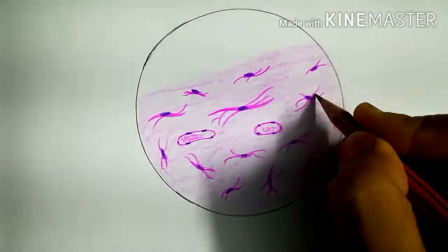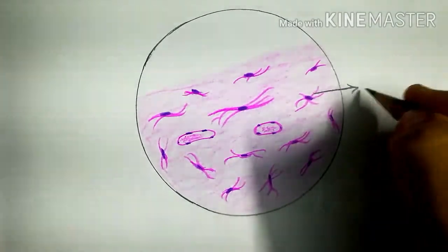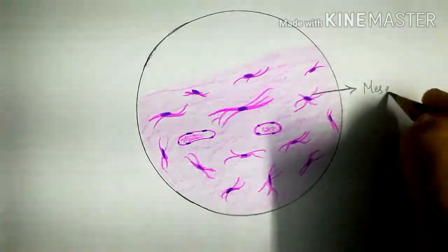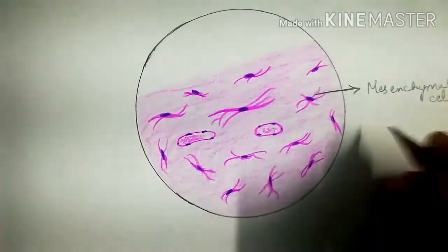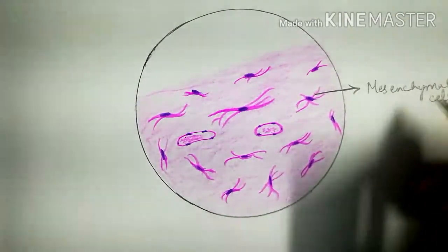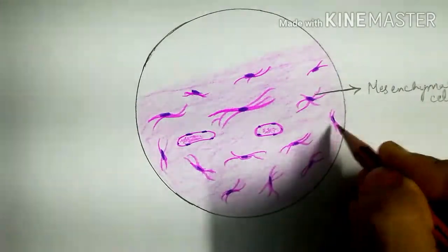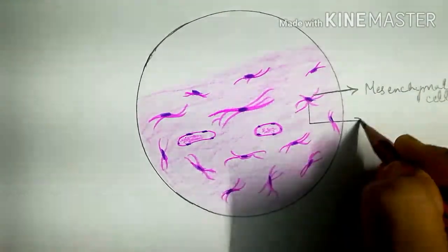Label this type of cells. These are the mesenchymal cells. Or we can say these are the inactive fibroblasts. So this is the nucleus.